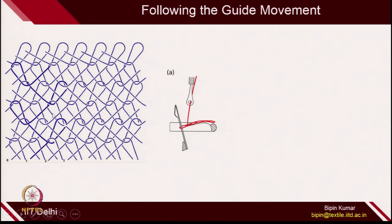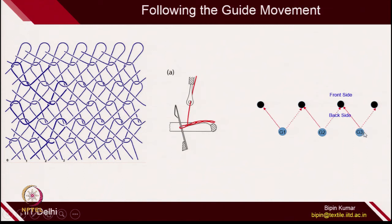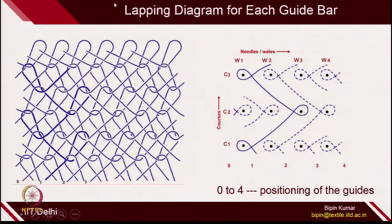The floating length is just 1 yarn, so you can easily say this is a single bar structure. In a single bar structure, all guides will have the same movement, so if you can express the movement of one guide, that will be more than sufficient. Let's suppose guide number 3 is providing yarn to this particular needle. In the next course, it provides yarn to the second needle — this is how the guide bar switches position from one needle to another.